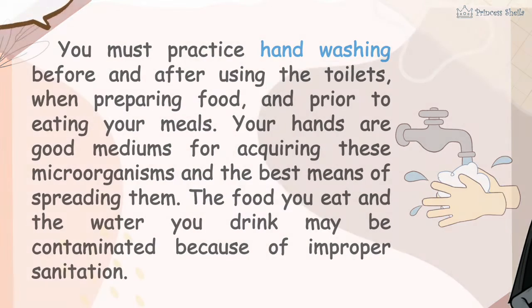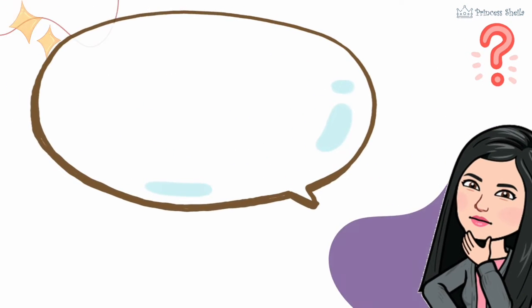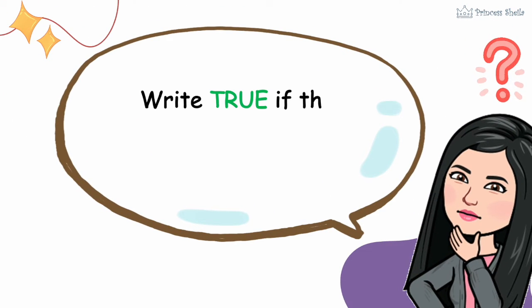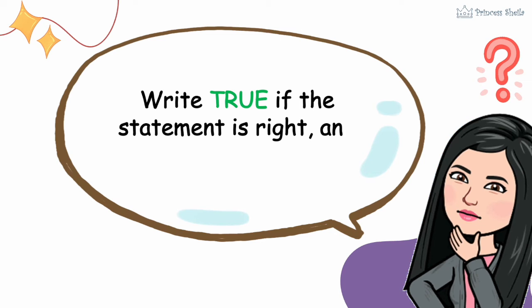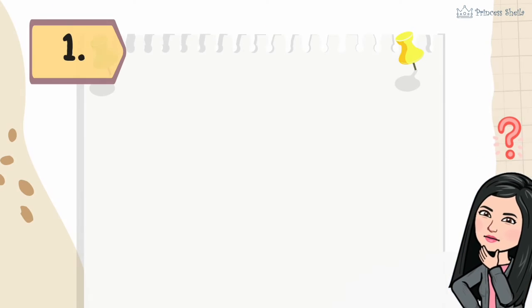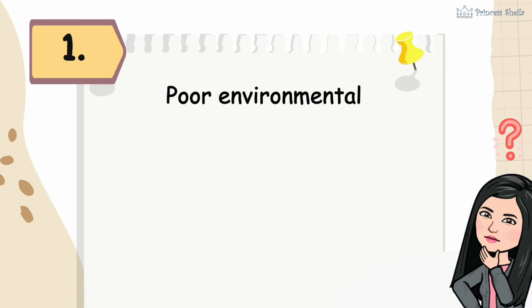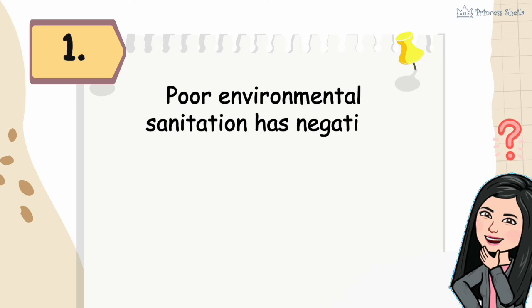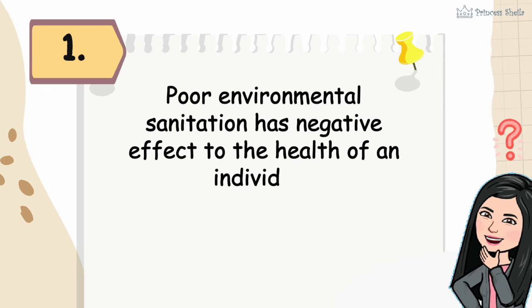Now, are you ready for a short quiz? Write true if the statement is right and false if it is wrong. One: poor environmental sanitation has a negative effect on the health of an individual.